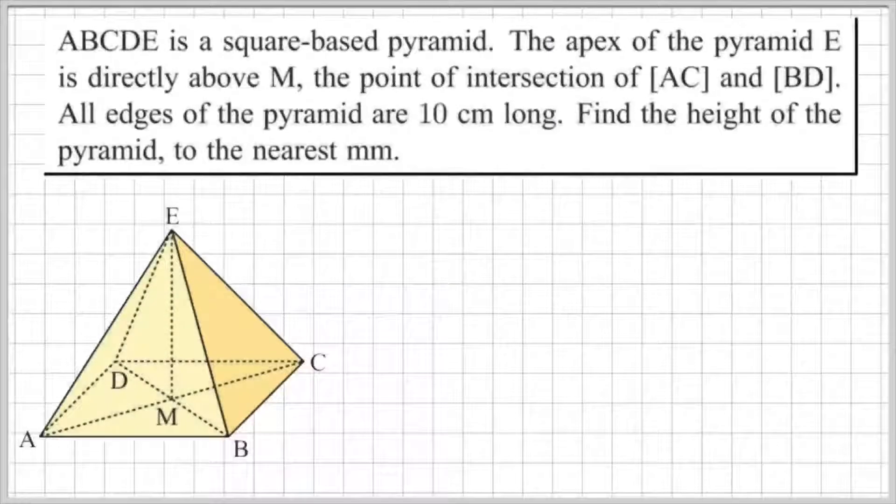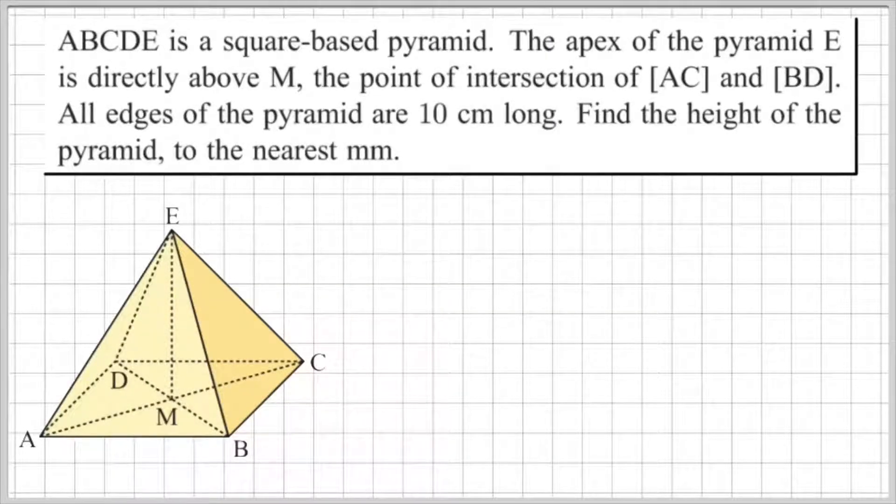The question I left you to solve in the last video was the following. ABCDE is a square-based pyramid. The apex of the pyramid E is directly above M, the point of intersection of AC and BD. So that's the midpoint here. M is the midpoint between AC and BD, and the apex is right above it.